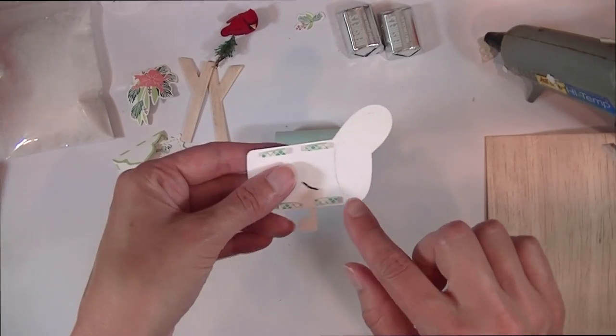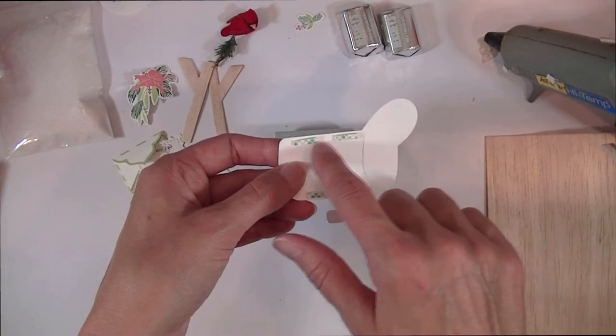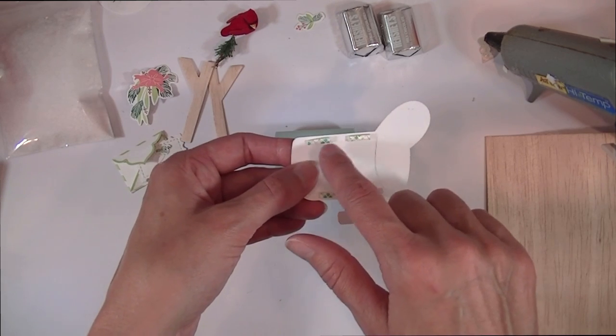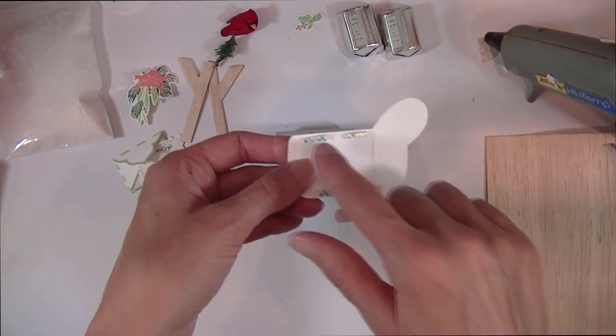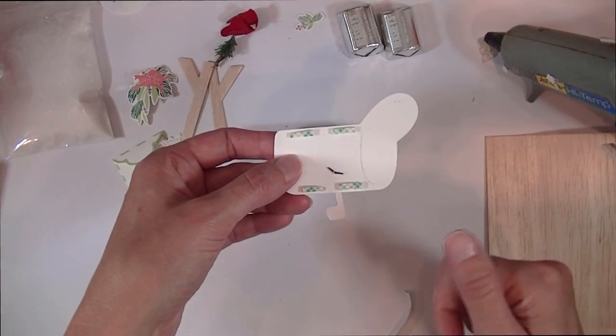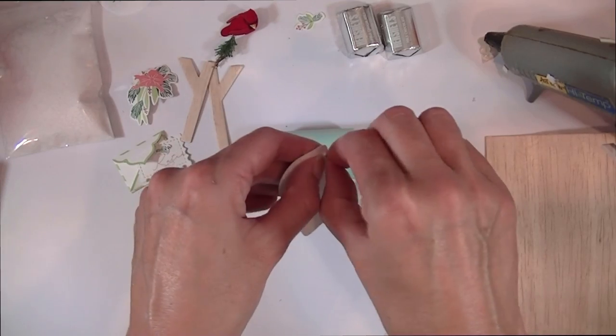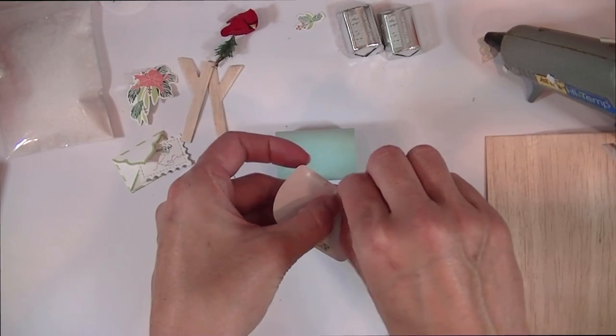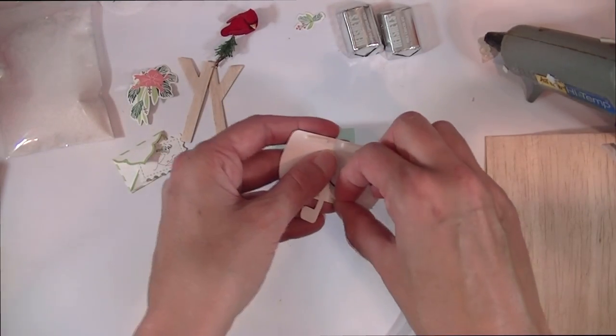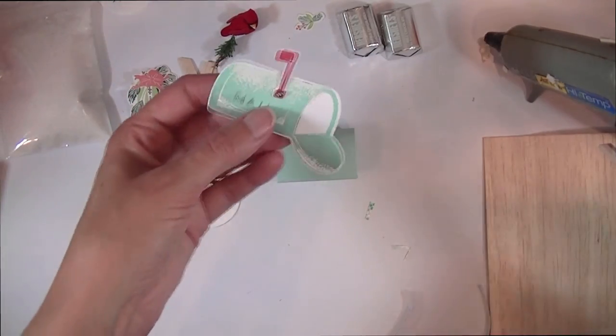You can see here I have some foam tape, and when you do that you want to make sure that you're putting the foam tape just at the top and bottom edges, leaving this center free so that you can slip the little die cut envelope into this slit in the mailbox. You want to make sure that that center is not getting adhered to the little mailbox.